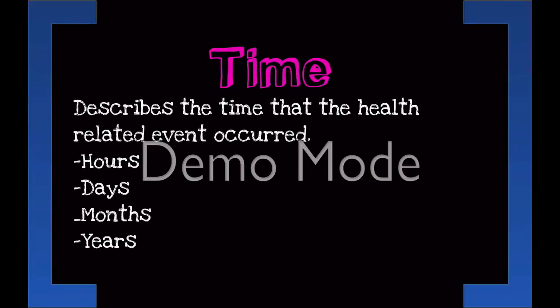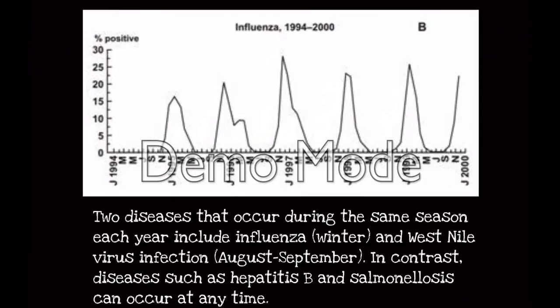Next is time. Time describes the time that the health-related event occurred. Depending on the health-related event, this could be in terms of hours, days, months, or years. For example, some diseases show a seasonal pattern. We know that influenza, or the flu, is most likely seen during the winter, as seen in this graph where the peaks of positive test results occur in the winter months. West Nile is opposite to the flu, where we see peaks of the virus infection in the summer between August and September. Not all diseases occur in seasonal patterns — diseases such as hepatitis and salmonella can occur at any time. Understanding the time of a disease or health-related condition can help scientists target prevention and intervention times.